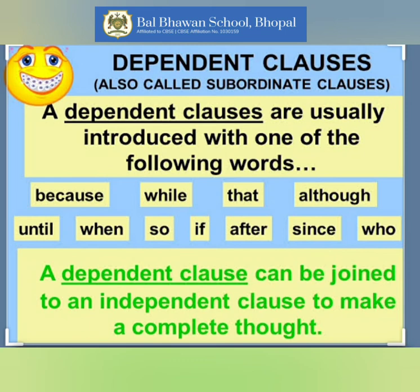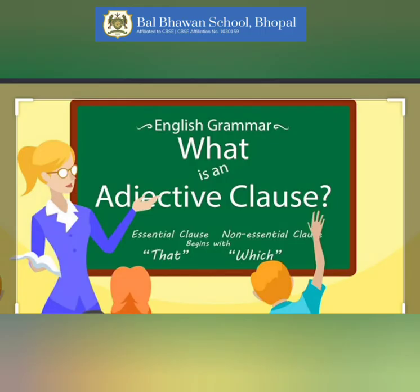Now in today's video we will learn more about adjective clause. As the definition goes, an adjective clause, also called relative clause, is a dependent clause that modifies a noun or a pronoun. Adjective clauses almost always come right after the nouns they modify or change.